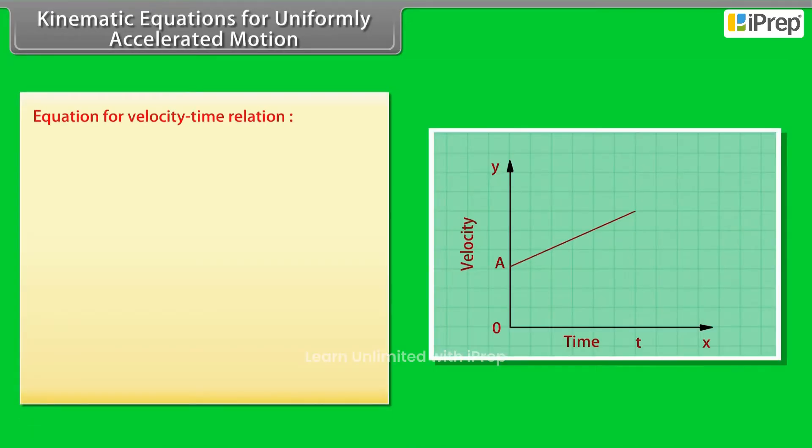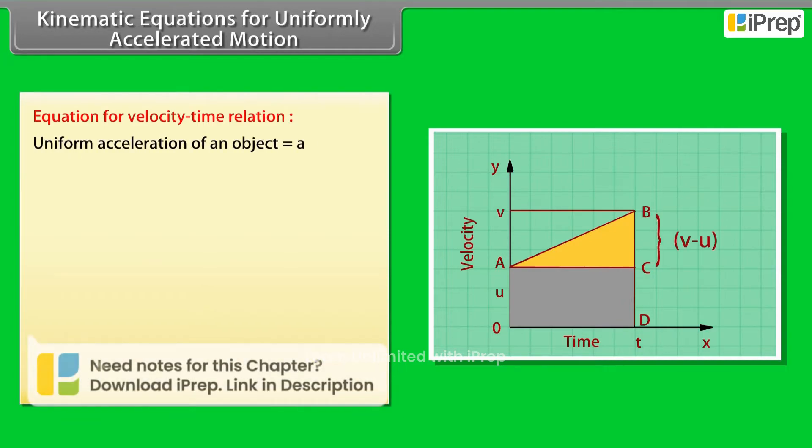Equation for velocity-time relation. Consider an object moving with uniform acceleration A. Let U be its initial velocity at time T equals 0, V is the final velocity after time T and S is displacement.